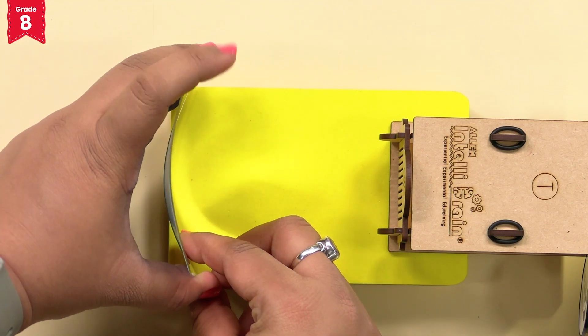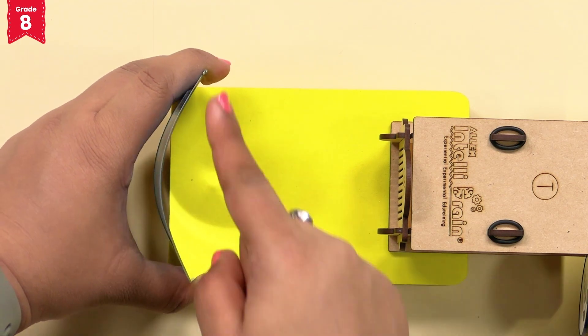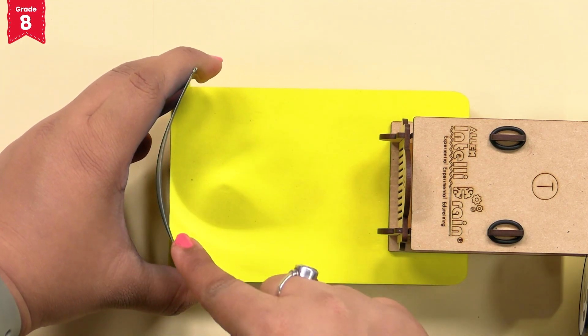Slightly bend the mirror inwards such that it turns into a concave mirror. Can you see any change in the reflected rays? Yes, we can see that all the reflected rays converge at a single point. We can also change its curvature to see the difference in the reflected rays.